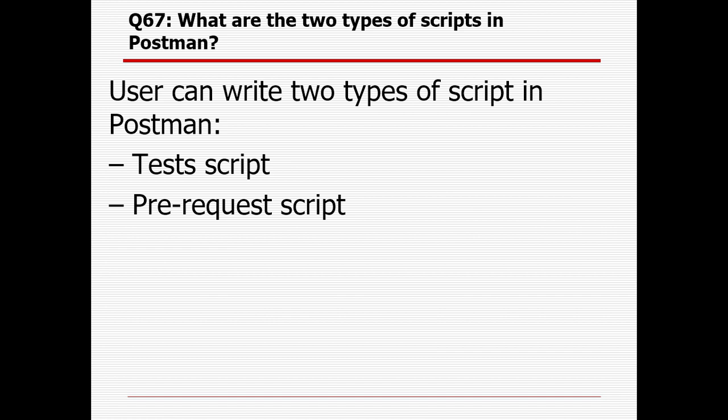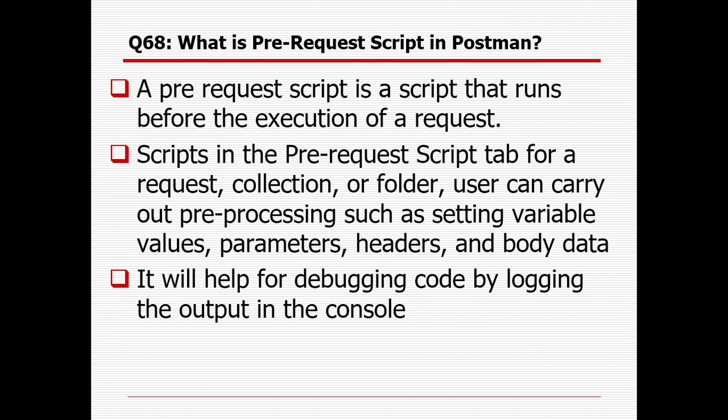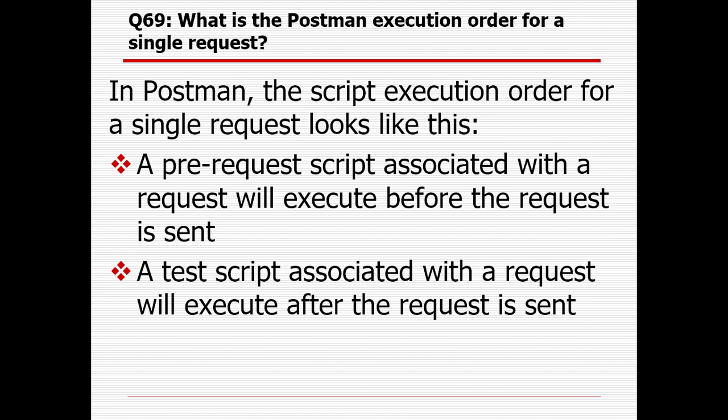What are the two types of scripts available in Postman? Users can write two types of scripts: a Test Script and a Pre-Request Script. A pre-request script runs before the execution of a request. In the pre-request script tab, for a request, collection, or folder, users can carry out pre-processing such as setting variable values, parameters, headers, and body data. It also helps for debugging code by logging output to the console. The execution order for a single request is: the pre-request script runs first, then the request is sent, then the test script runs.